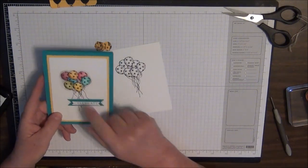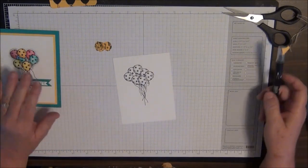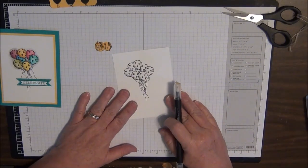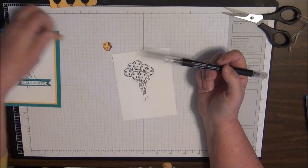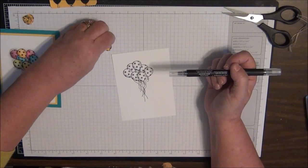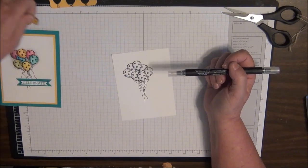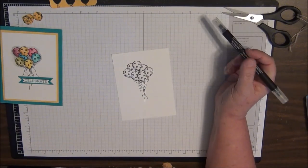Now I'm just going to show you quickly how I would color one of the balloons, because people ask what's your preferred method. Since this is on Whisper White, I like to use my blender pen. I don't like to use the Aqua Painter because quite frankly on Whisper White it's just too wet. It gets too much water on the paper and it's just not fun.